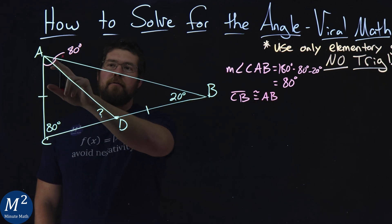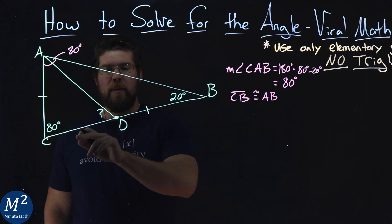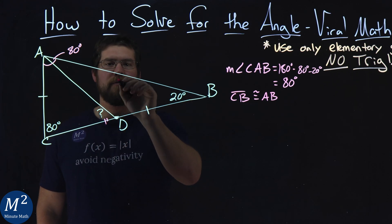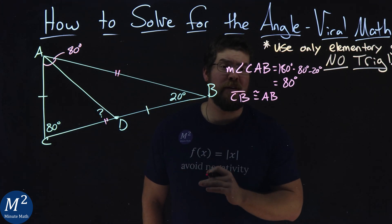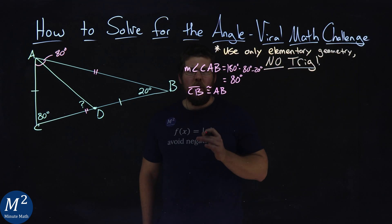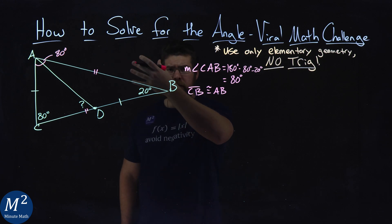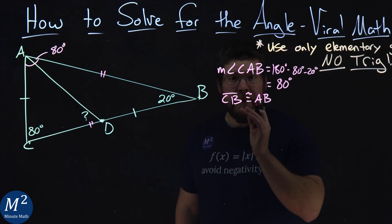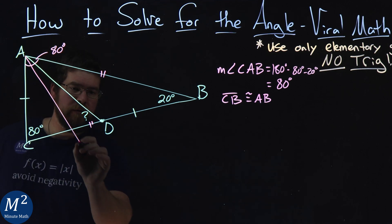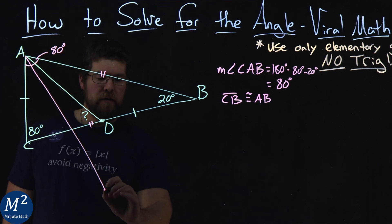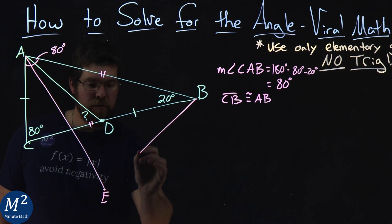Now we have this special information — let's put a double dash to mark those equal lengths. Now I'm going to do something tricky: I'm going to create a new triangle within this triangle. We're going to create an equilateral triangle by drawing a line from A down to a new point E on CB, connecting A to E to B.